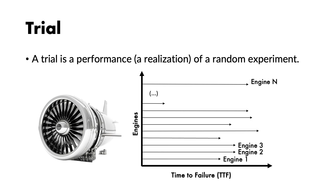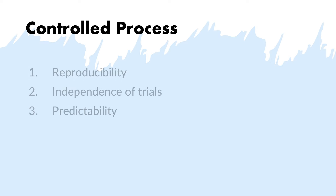In our experiment of analyzing the lifetime of an equipment, such as an engine, a trial is every time we analyze the lifetime of a different engine. So in this case, in this picture, we have n trials. A random experiment is a controlled process because it respects three properties.